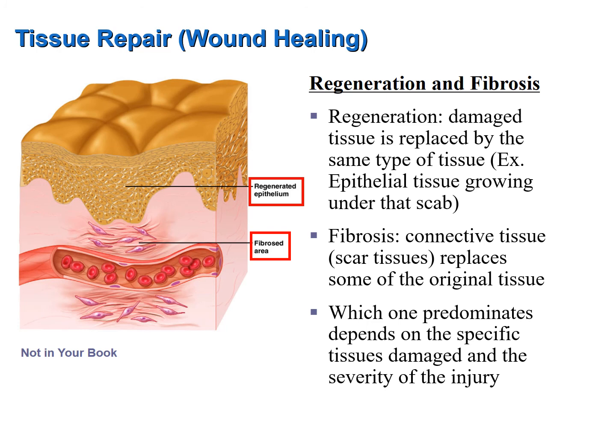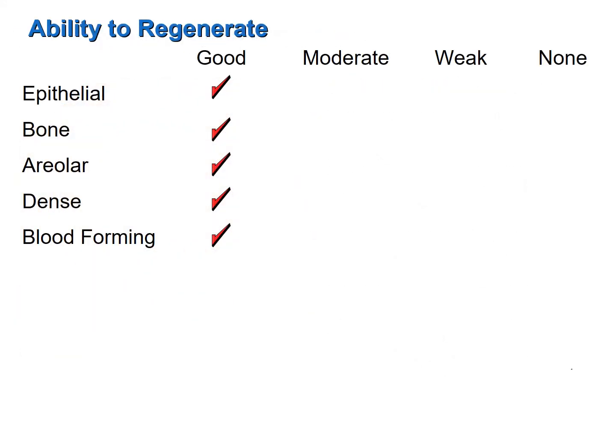In general, the more severe the injury, the more fibrosis occurs. However, certain tissues are more prone to regeneration than others. Tissues that regenerate best include epithelial tissue, bone tissue, areolar connective tissue, and blood-forming tissues.